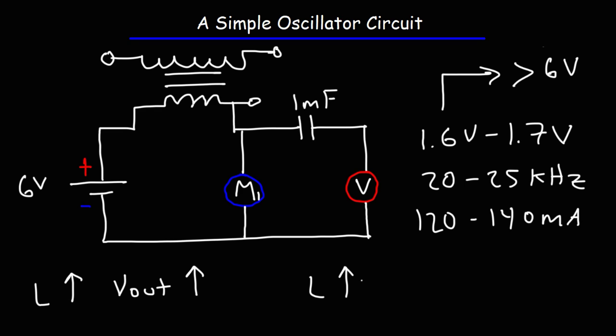As you increase the inductance of the inductor, the internal resistance goes up. So, this will increase the voltage, but if the internal resistance is too high, the motor may not spin at all, and so the output voltage might be zero.